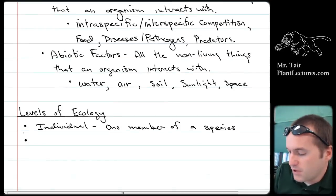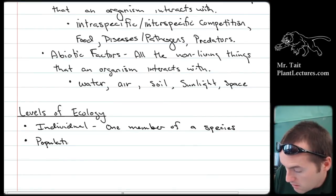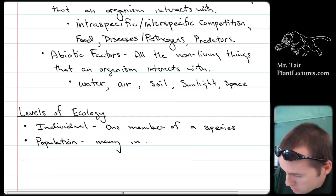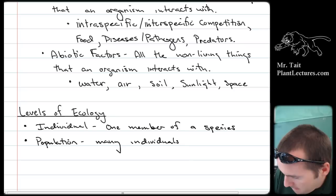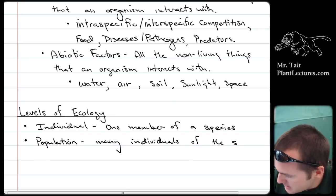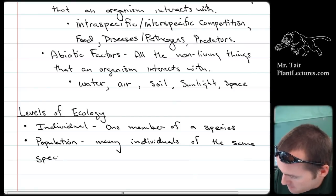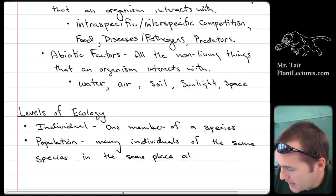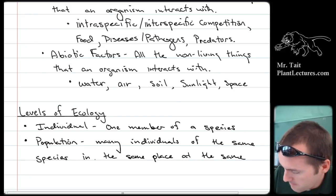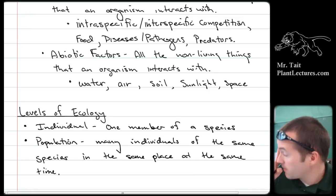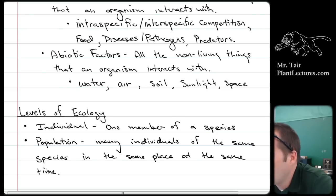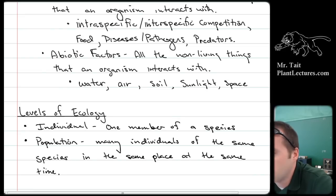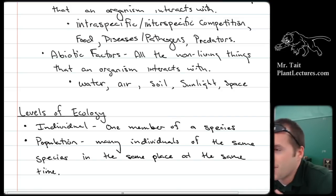If you have many individuals, we call that a population — many individuals of the same species, in the same place, at the same time. For example, the population of Florida encompasses the current residents; your great-great-great grandfather who lived in Florida would not be included because it's not the right time period.